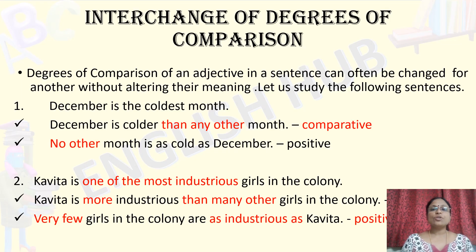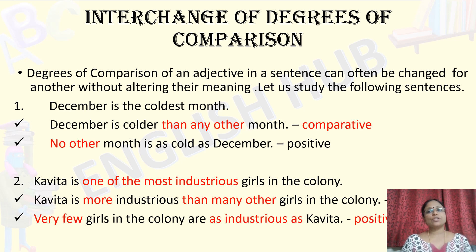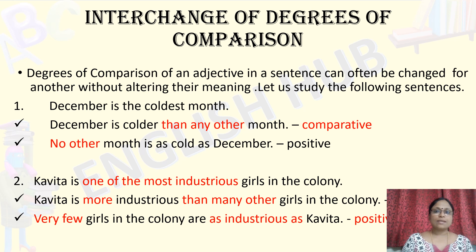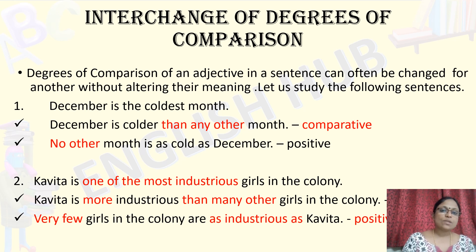Greetings dear children. Another short video which will help you to get one mark in English language paper 1, question 5 — transformation of sentences. Today's concept is interchange of degrees of comparison. I have given here two sets of examples and two or three examples, then an assignment. That's all — five minutes. So let's look at the first set of examples.